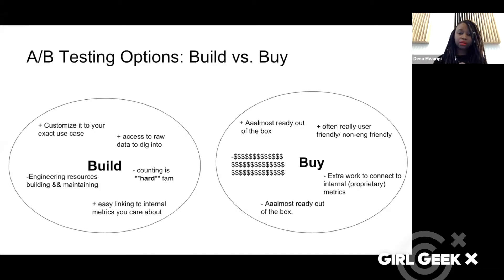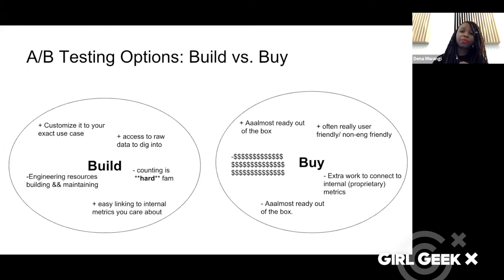When we thought about this, we had to make a decision between building something or buying something — there are pros and cons to both. With buying, of course it costs money — these can run up to 40 to 60k sometimes. On the plus side, they're almost ready out of the box. A bit of a negative is you have to do extra work to link them to internal metrics, and you have to think about whether you want to send all your sensitive user information out to a third party, and if not, how you get that information back and connected into your internal metrics.